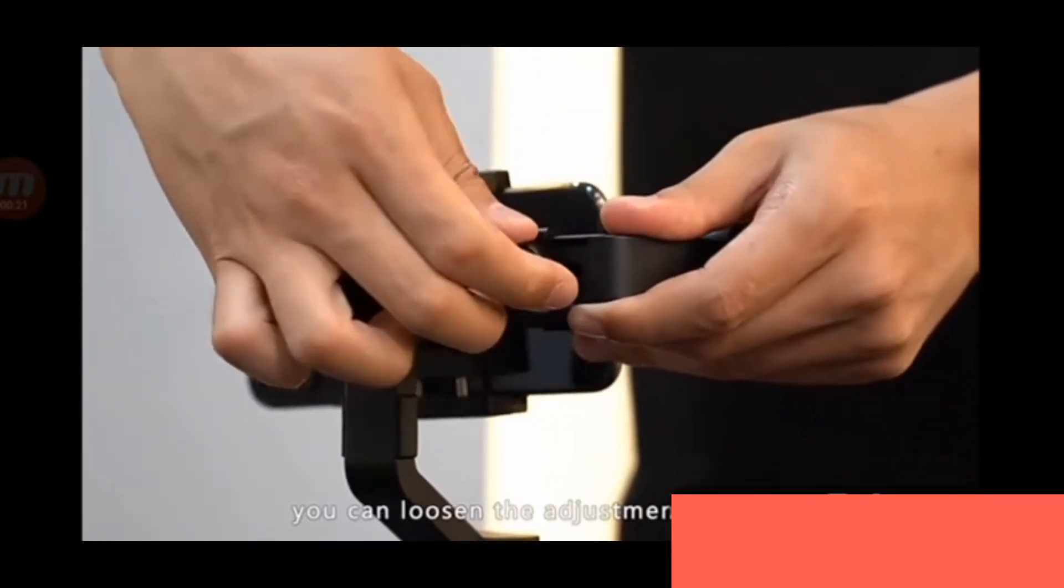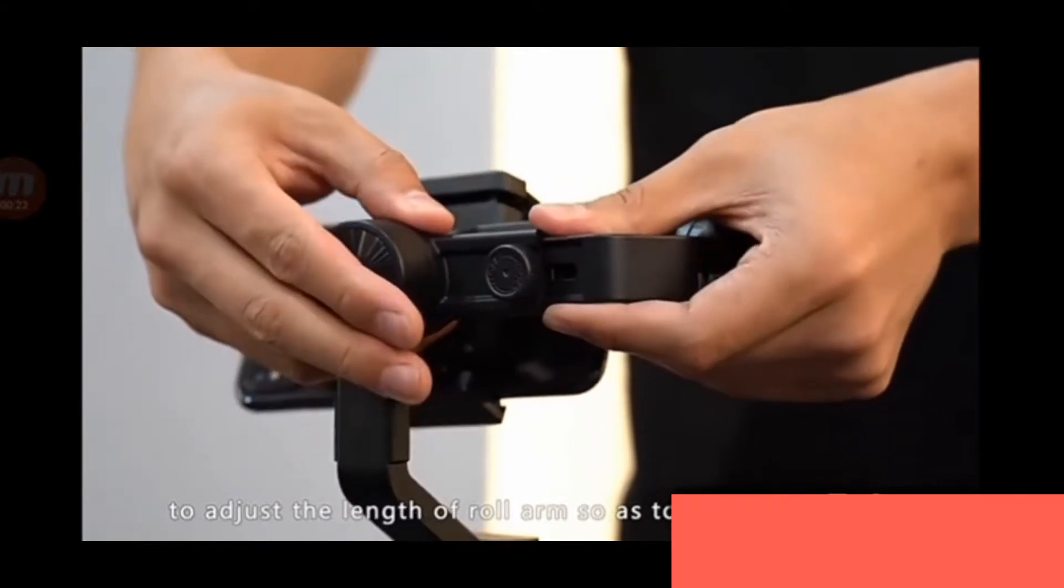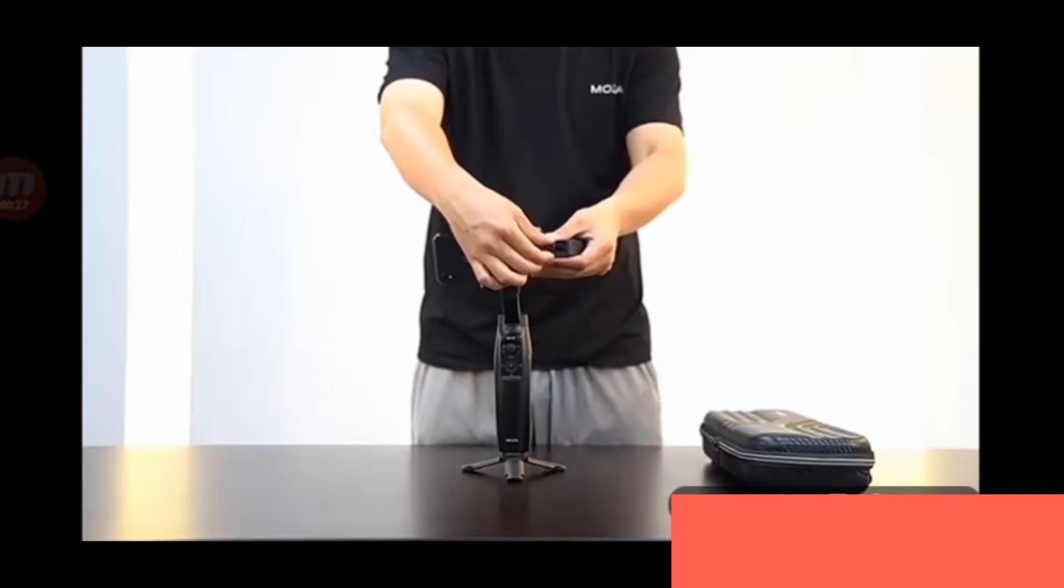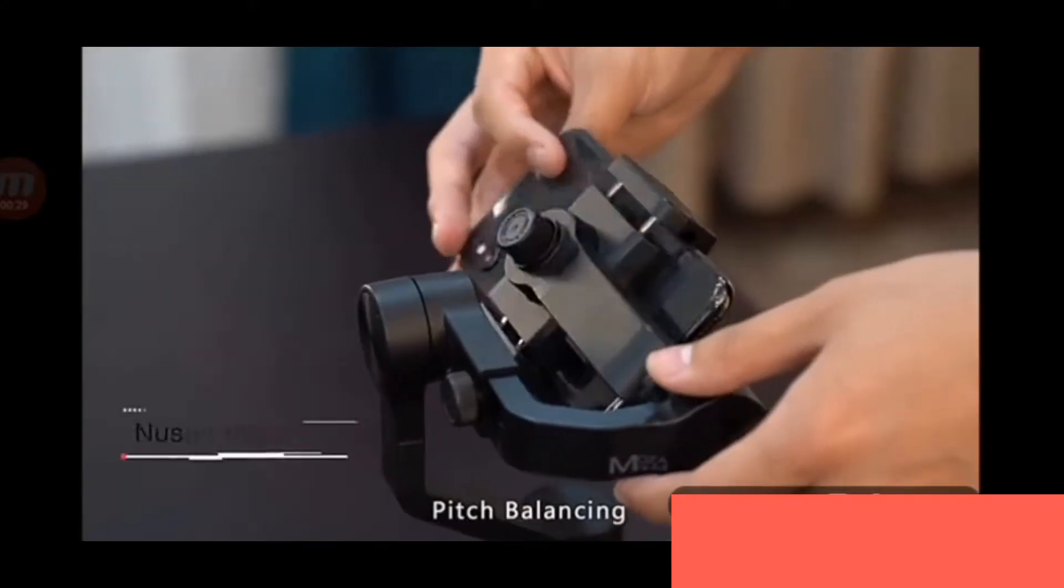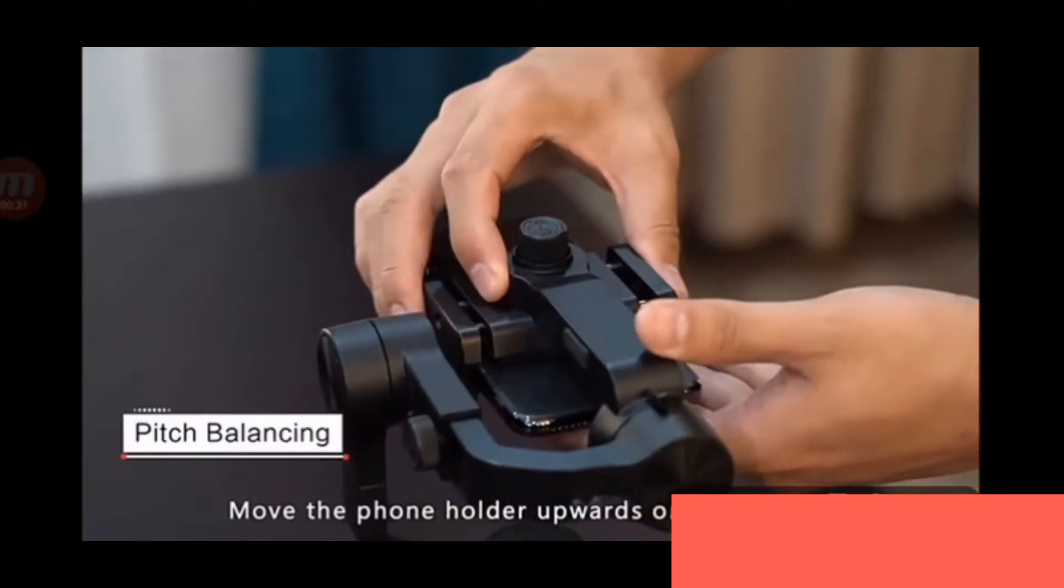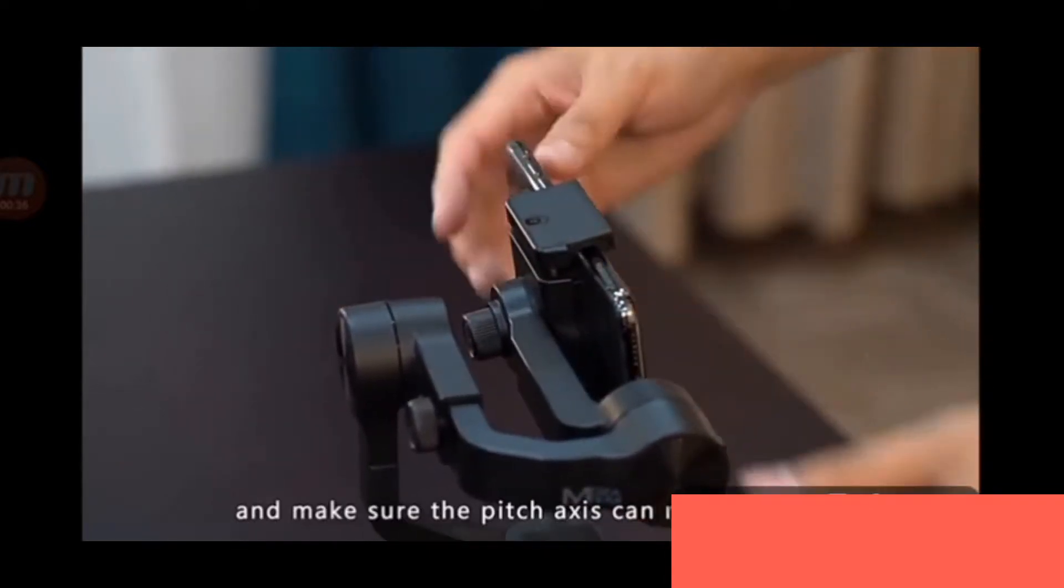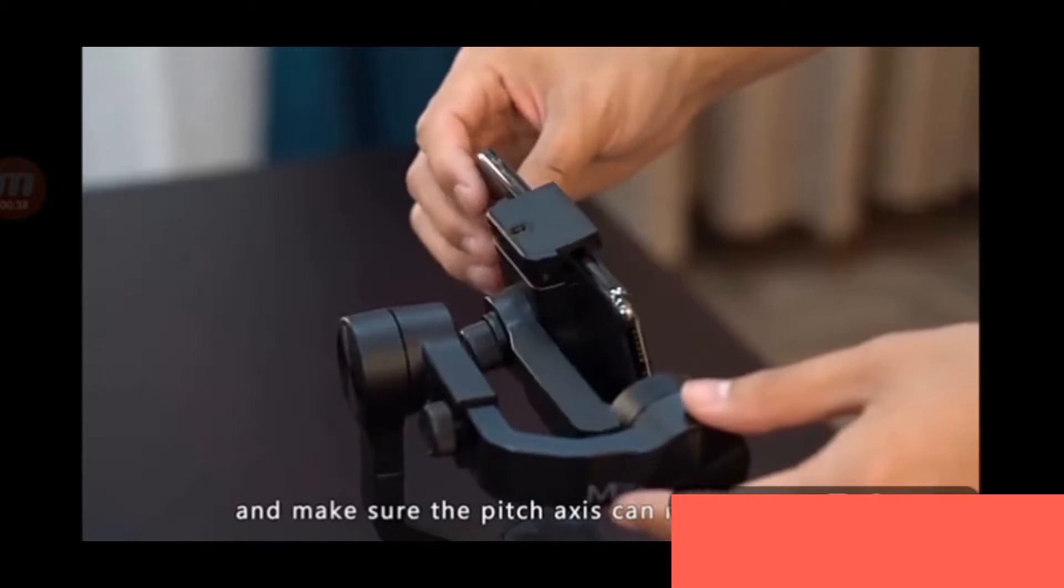You can loosen the adjustment screw to adjust the roll arm's length. For pitch balancing, adjust the cell phone mount upwards or downwards to keep it level on the pitch arm and make sure the pitch axis can rotate freely.